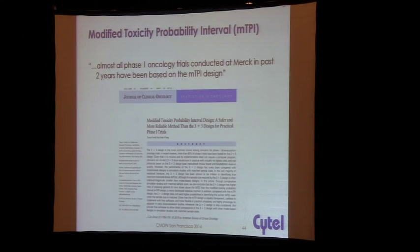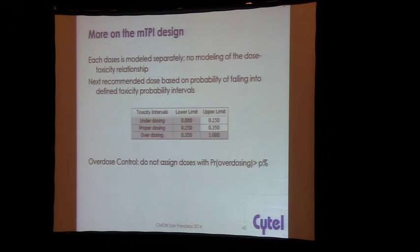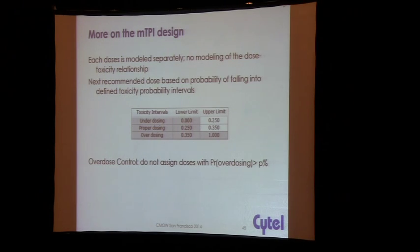It's very similar in spirit: there's a model, although here each dose is modeled separately, so you don't get borrowing across doses. You can model the dose toxicity curve, but it's not fitting something to all doses together. It also looks at particular intervals of toxicity and bases recommendations on whether to escalate, stay, or de-escalate based on being in those intervals.